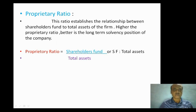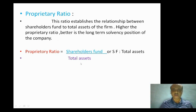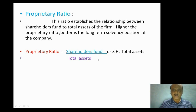Proprietors and shareholders are the same, and total assets is related to shareholders fund. The proprietary ratio formula is: shareholders fund divided by total assets. Here total assets includes current assets and non-current assets.